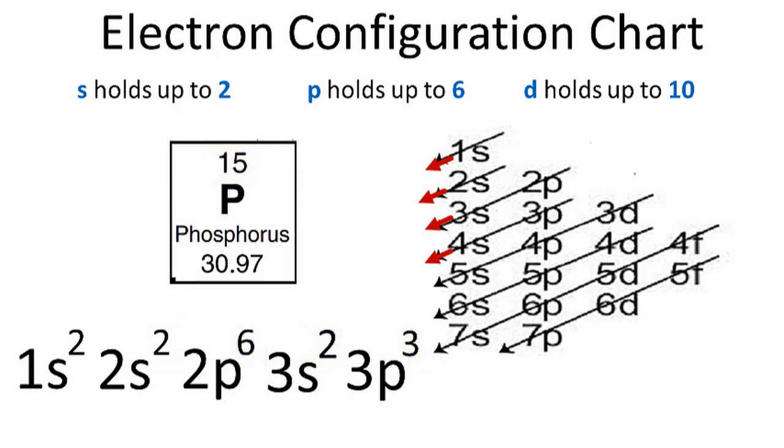So this is the electron configuration for the phosphorus atom. This is Dr. B — thanks for watching.